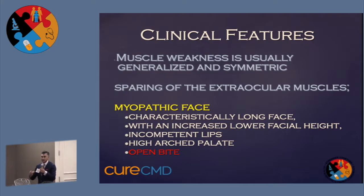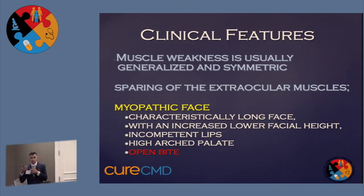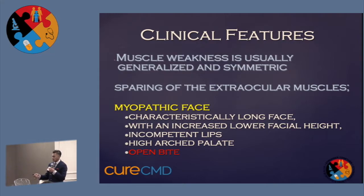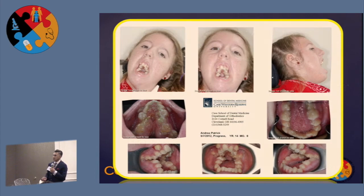There's constant drooling and incompetent lips. The palate then becomes very arched in shape. That's the downward growth of the skeleton of the upper jaw, which we call the maxilla. The maxilla is the upper jaw; the mandible is the lower jaw. Both need to grow in sync for the jaws to meet. When you have abnormal growth of one, it affects the growth of the other jaw. Then you have this resultant open bite deformity that exists in a lot of these patients.